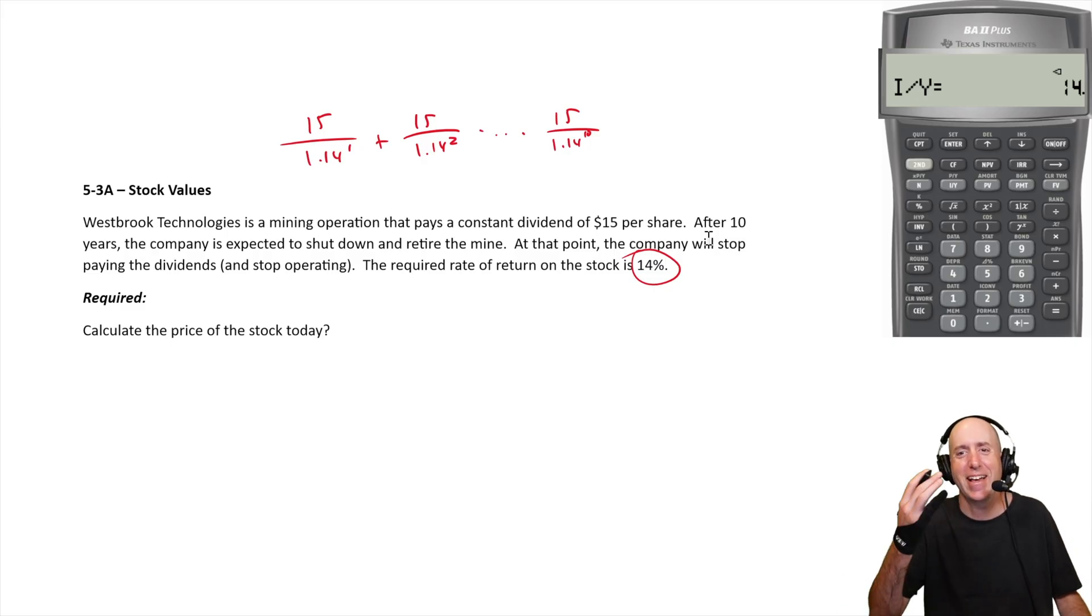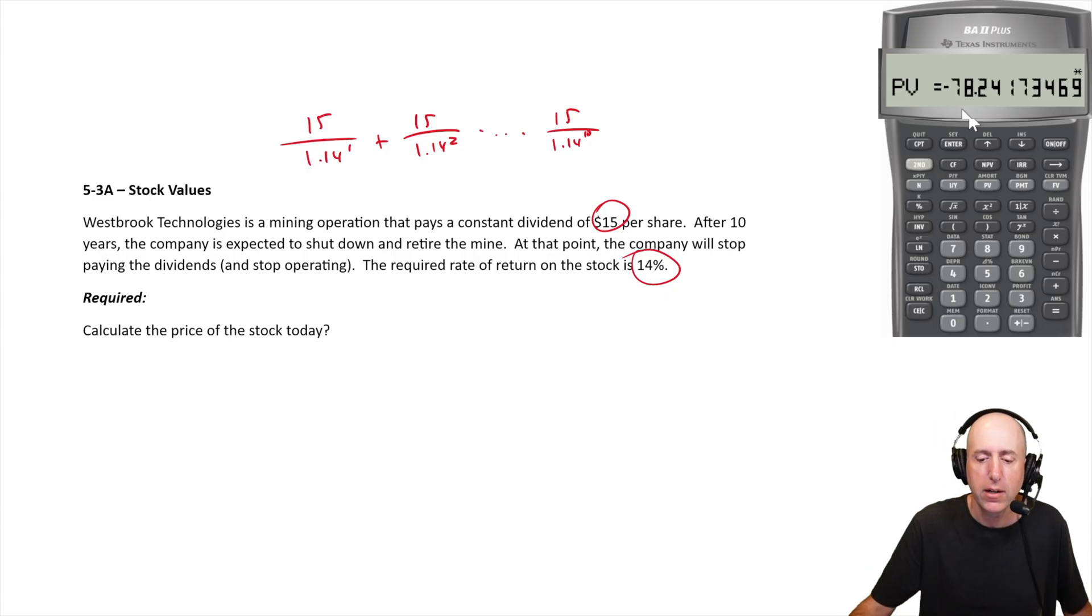Forgive that stumble. The amount of the payment is $15 dollars. I felt like I sounded like Porky Pig, that's a very old reference. The amount of the regular dividend payment is $15 and the future value is zero. This thing's going to zero, so FV goes in as zero.